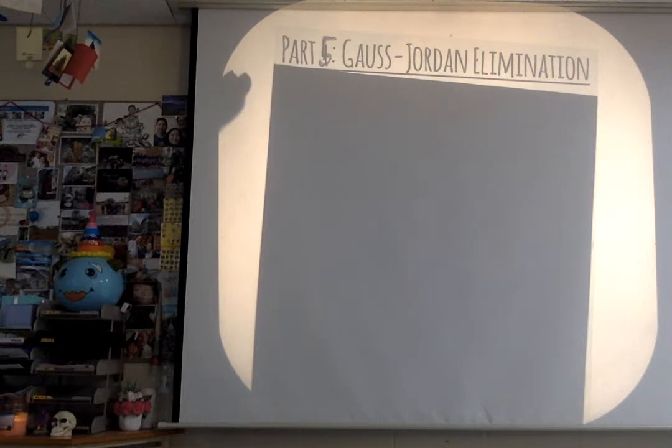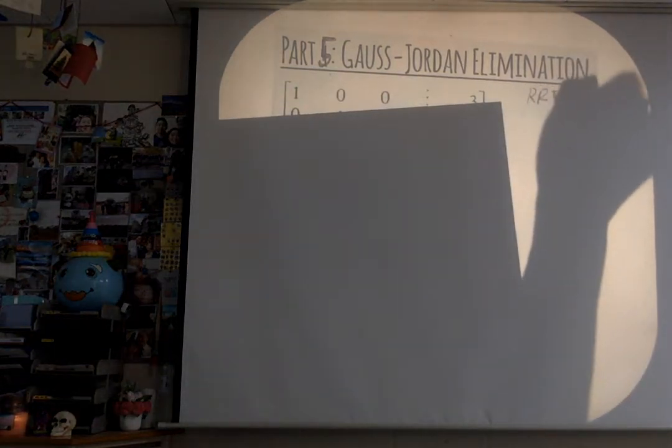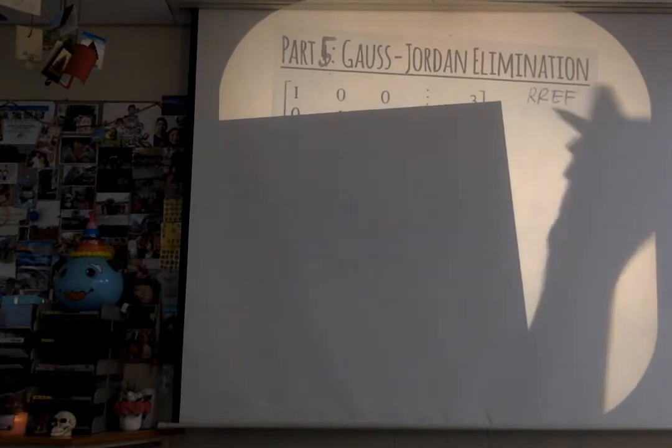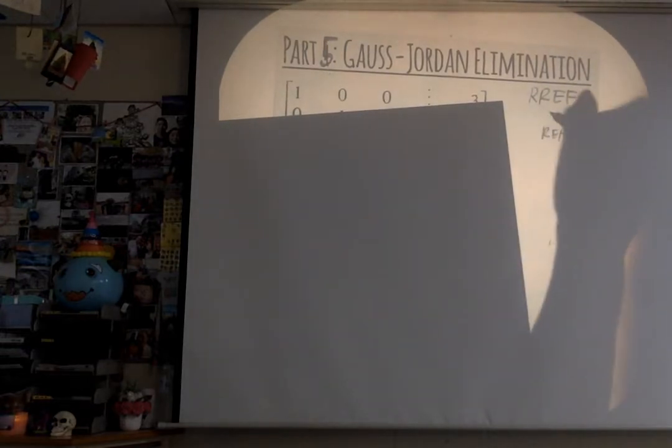So Gauss-Jordan elimination requires one more step after Gaussian elimination. Gauss Jordan is gonna get you to RREF. Remember, Gaussian elimination only takes you to REF.